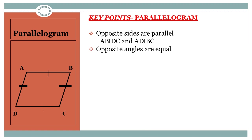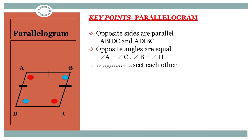Second property: opposite angles are equal. The opposite angle pairs are angle A & angle C, and angle B & angle D. As per the property, angle A equals angle C and angle B equals angle D.